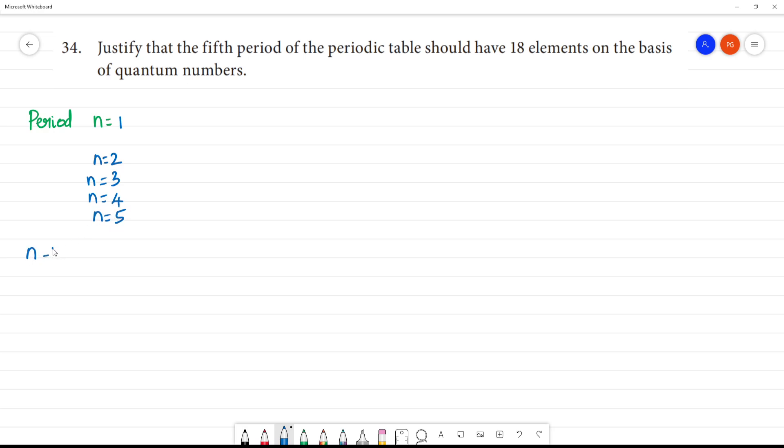So, what is here? n is principal quantum number. Okay, in the principal quantum number, 5 is equal to 6, fifth period is equal to 6, sixth period is equal to 7th period.